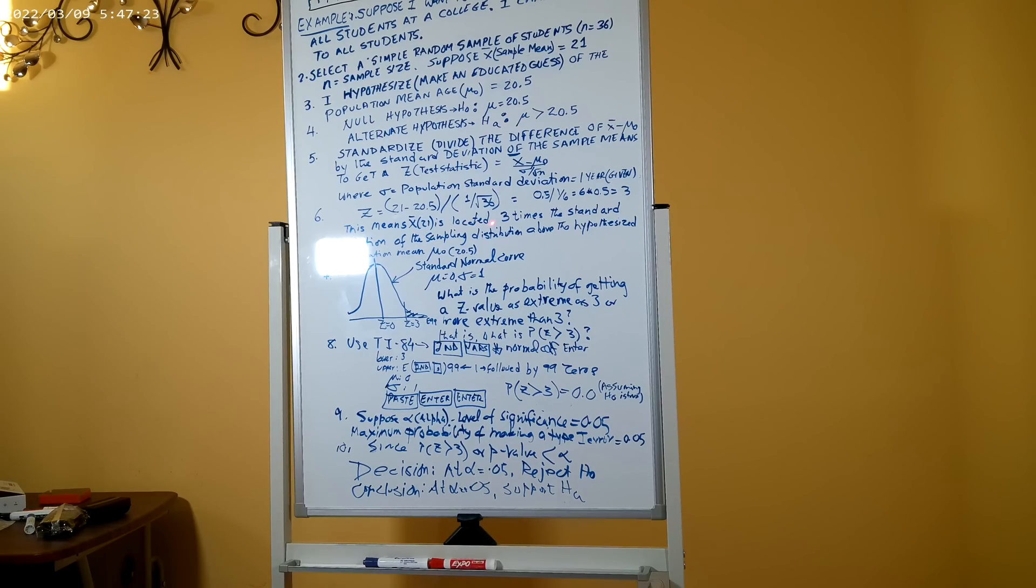Which finally simplifies to 6 times 0.5 is 3. This means the sample mean x bar 21 is located 3 times the standard deviation of the sampling distribution, or 3 standard errors of the mean, above the hypothesized population mean mu 0 of 20.5.